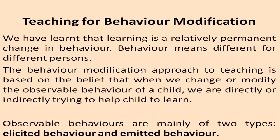We have learned that learning is a relatively permanent change in behavior. Behavior means different things for different persons. The behavior modification approach to teaching is based on the belief that when we change or modify the observable behavior of a child, we are directly or indirectly trying to help the child to learn. The behaviors that are observable are mainly of two types: elicited behavior and emitted behavior.